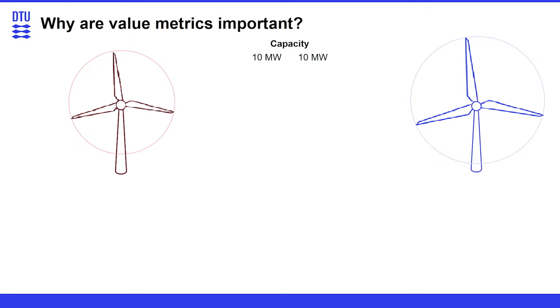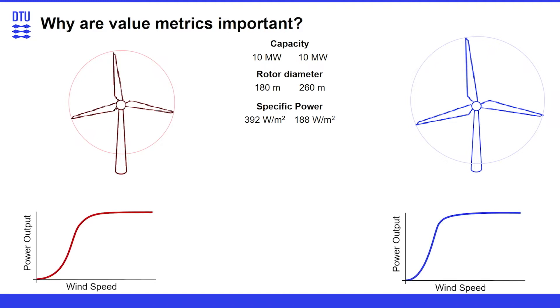They both have the same capacity, however the blue one has a much larger rotor diameter and this comes with a lower specific power. Because of that, they also have different power curves with different power outputs per wind speed.